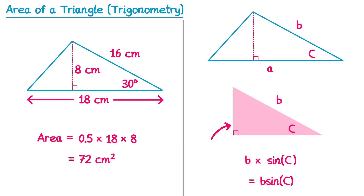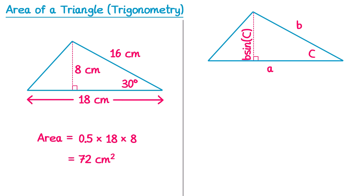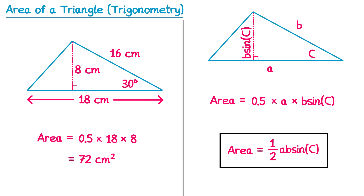So the height of this triangle will always be b sine C. To find the area we do one half multiplied by the base a, multiplied by the perpendicular height b sine C. Multiplying all of these together gives the formula: area equals one half ab sine C. Using this formula we can find the area of any triangle using trigonometry, as long as we're given that information.